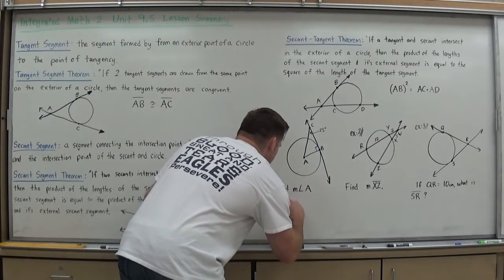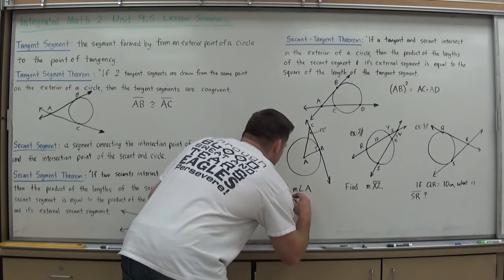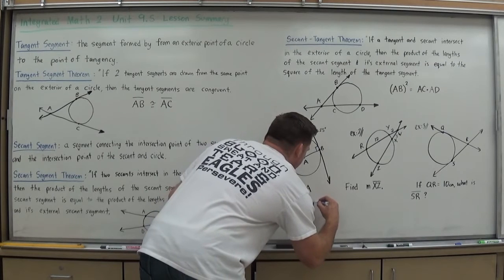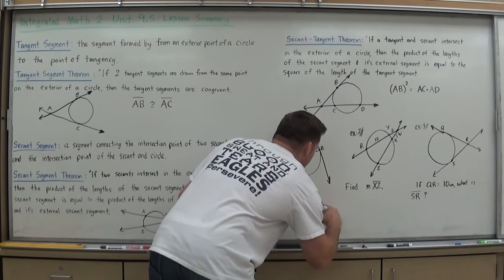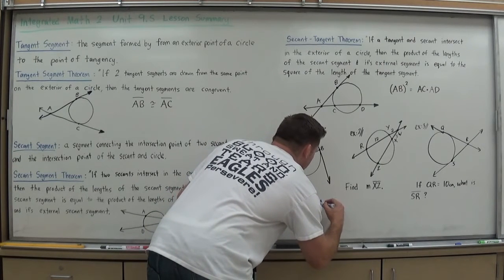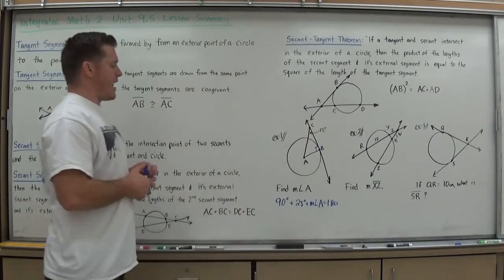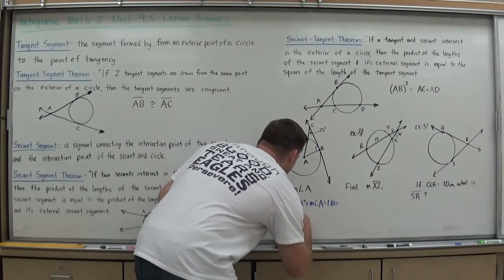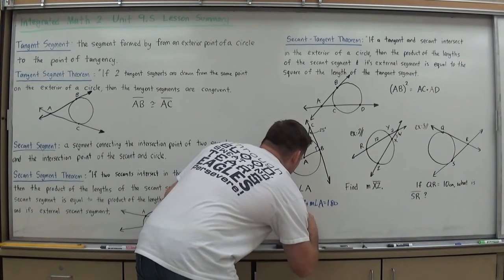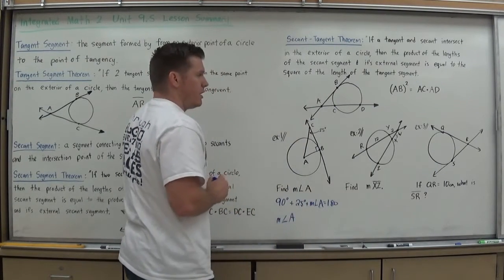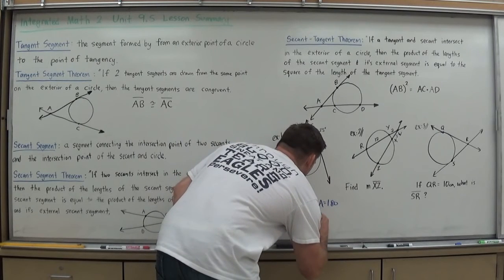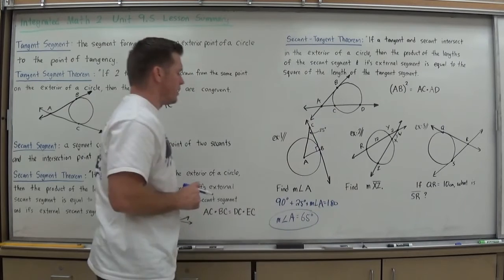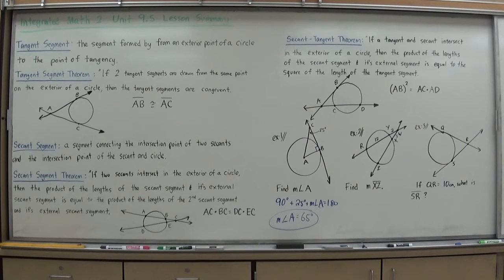I can use the triangle sum theorem that all angles in a triangle add up to 180 to solve this. 90 degrees plus 25 degrees plus my measure of angle A equals 180 degrees. I can add 90 and 25 together, subtract them from 180, and get the measure of angle A. That would be 115, giving me 65 degrees for the measure of angle A.